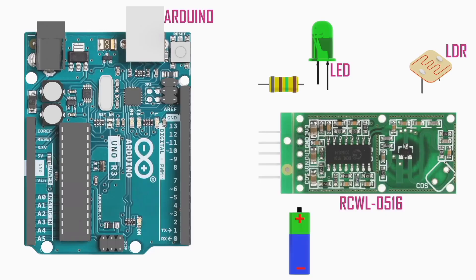We can also connect the sensor module to an Arduino. We will wire the RCWL-0516 sensor to the Arduino board and connect an LED on pin 13 that will light up when motion is detected. Parts required include an Arduino UNO board, RCWL-0516 microwave radar sensor, light-dependent resistor, 220 ohm resistor, breadboard, and jumper wires.